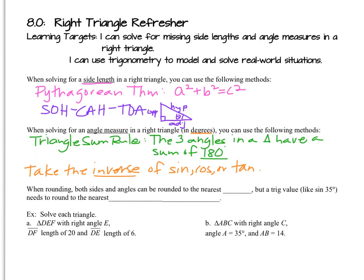If not — if we know side lengths instead — we could take the inverse of SOHCAHTOA: the inverse of either sine, cosine, or tangent, like we did in our last chapter. When rounding, we'll round both sides and angles to the nearest tenth, and we'll stay consistent for the whole chapter.